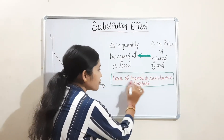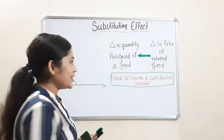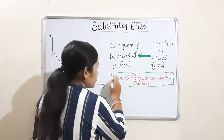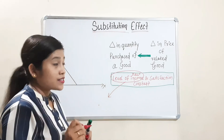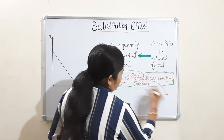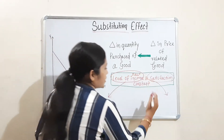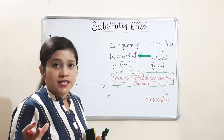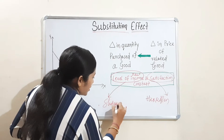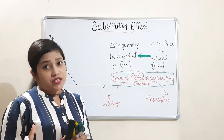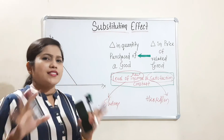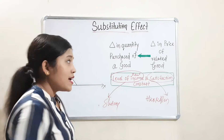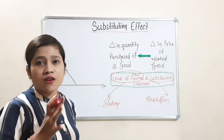This substitution effect applies when level of real income and satisfaction is constant. Level of satisfaction constant is given by Hicks and Allen. Level of real income — that is purchasing power — constant is given by Slutsky. So the two differences are: substitution effect when satisfaction is constant, given by Hicks; and substitution effect when purchasing power or real income is constant, given by Slutsky.